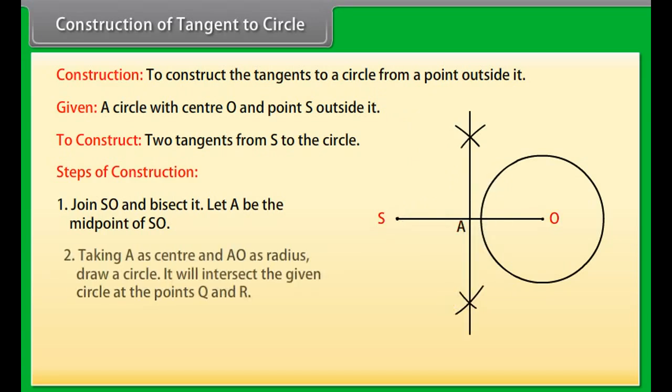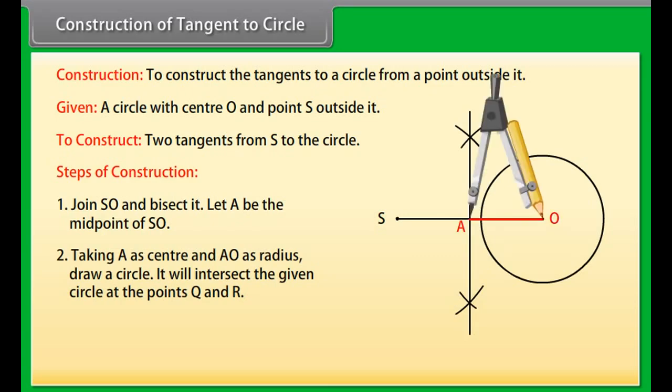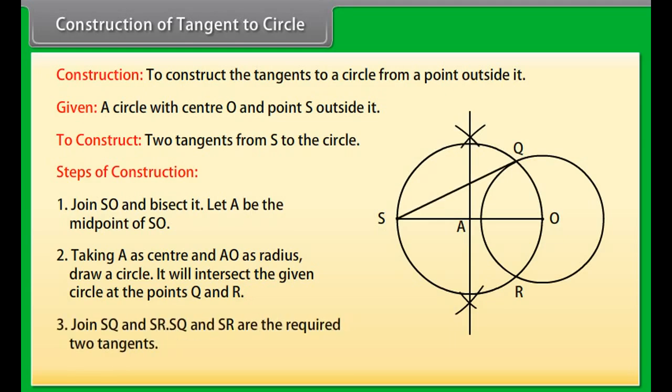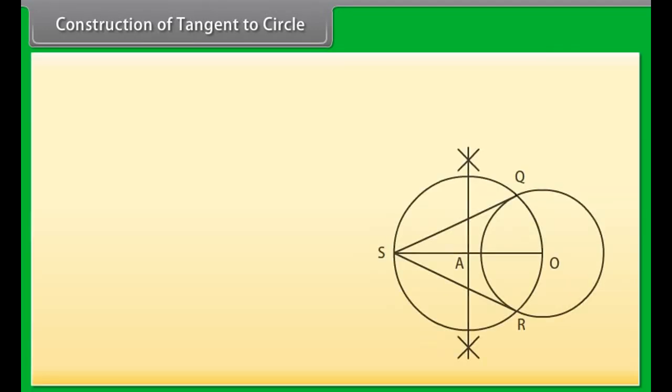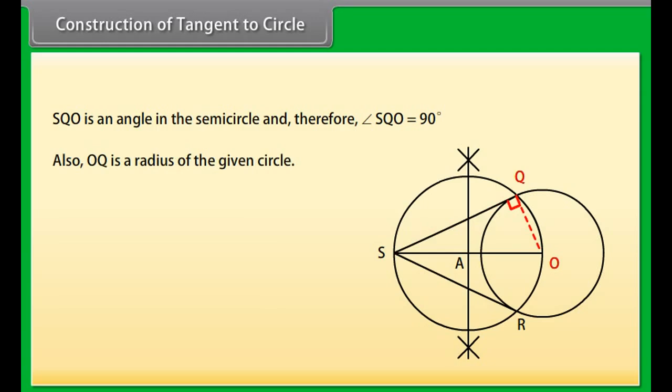Construction of tangent to circle. To construct the tangents to a circle from a point outside it. We are given a circle with center O and a point S outside it. We have to construct the two tangents from S to the circle. Steps of construction: Join SO and bisect it. Let A be the midpoint of SO. Taking A as center and AO as radius, draw a circle. It will intersect the given circle at the points Q and R. Join SQ and SR. SQ and SR are the required two tangents.